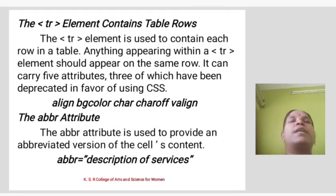The tr element contains table rows. The tr element is used to contain each row in a table. Anything that appears within a tr element should appear on the same row. It can carry five attributes, three of which have been deprecated in favor of using CSS: align, bgcolor, and valign are the attributes used in the tr element.